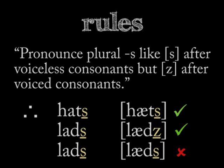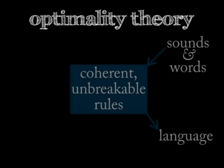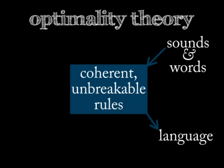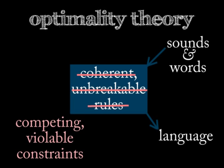A paradigm called optimality theory takes issue with this approach. Instead of applying unbreakable rules to language, optimality theory contends that violable, competing constraints do a better job of explaining how language works.